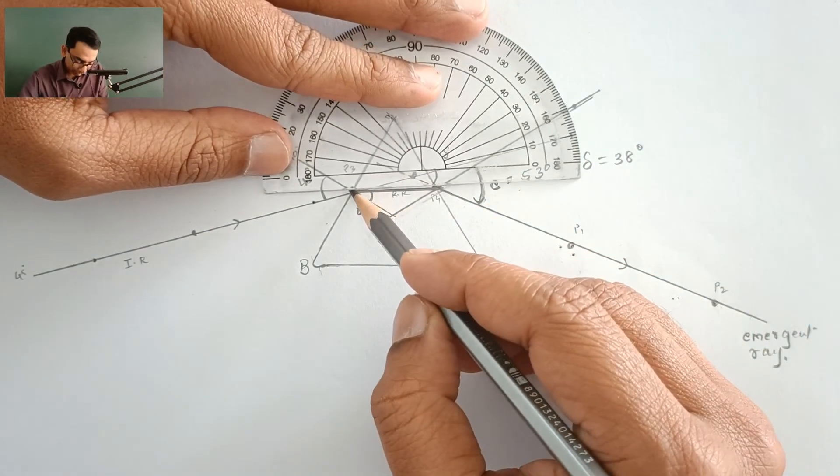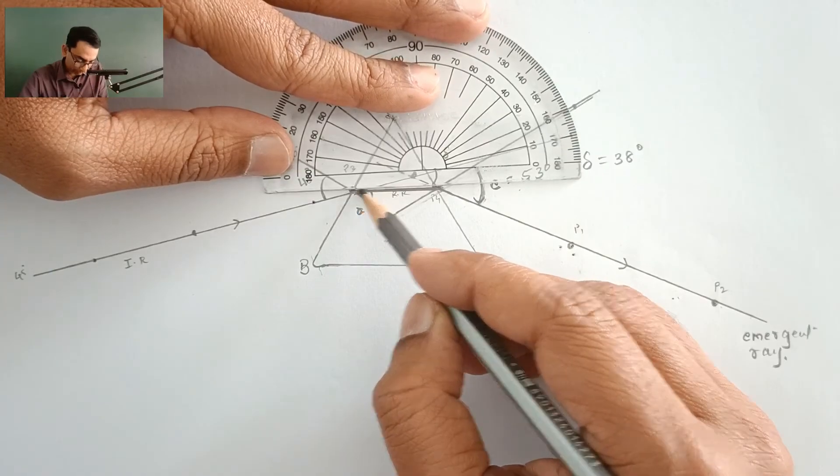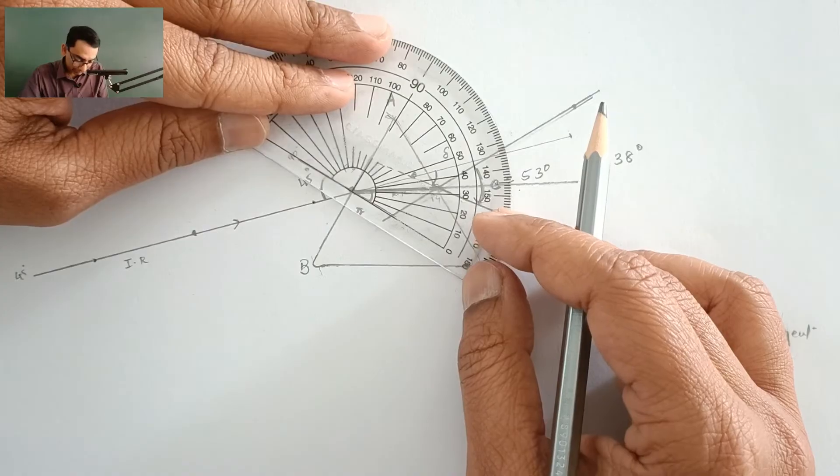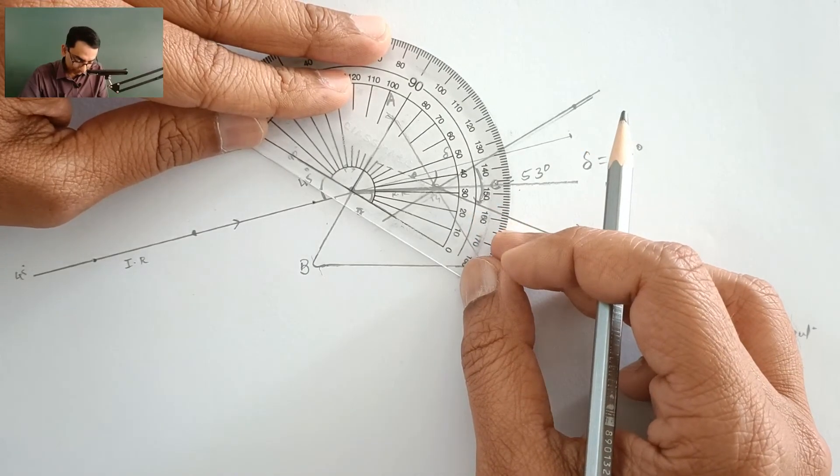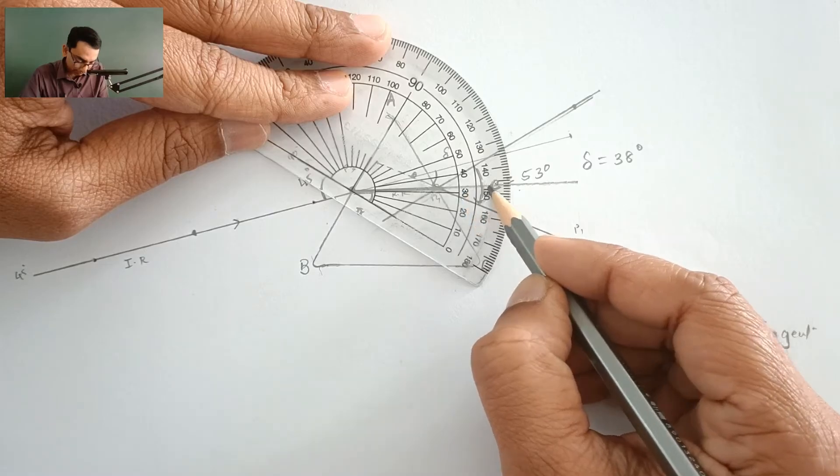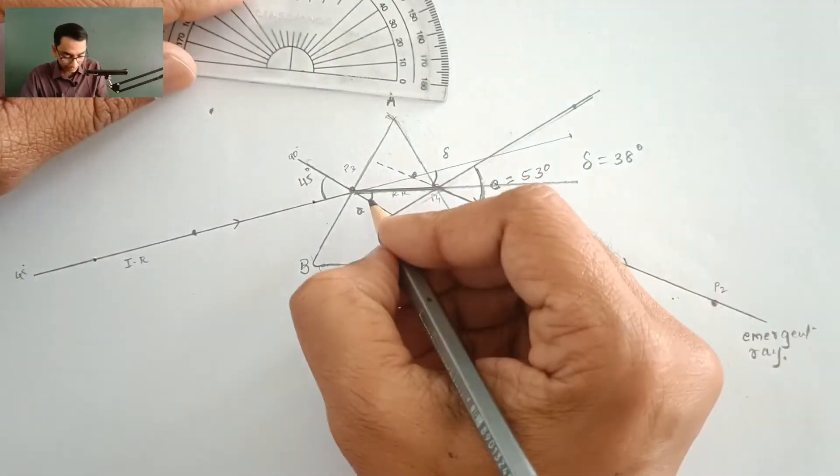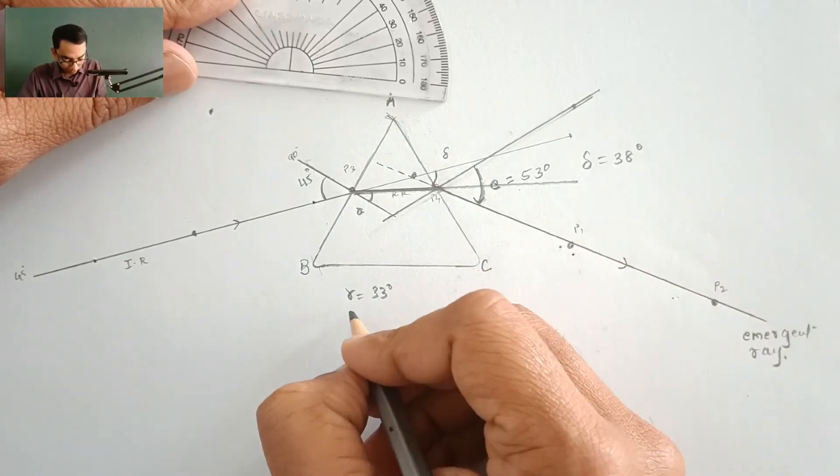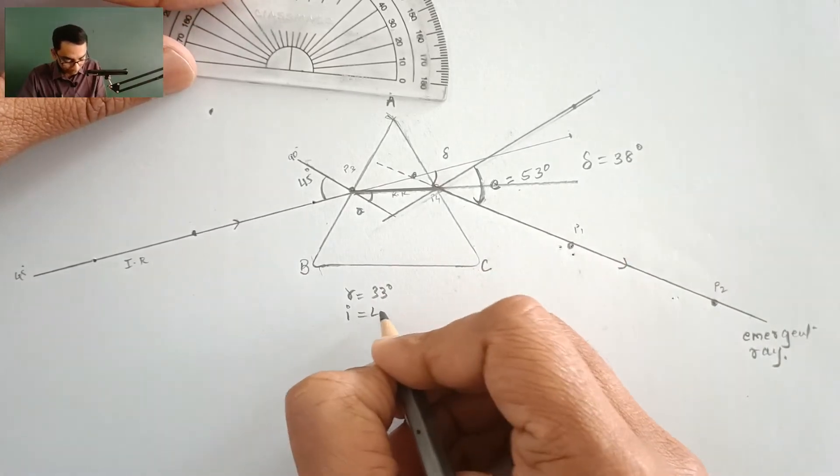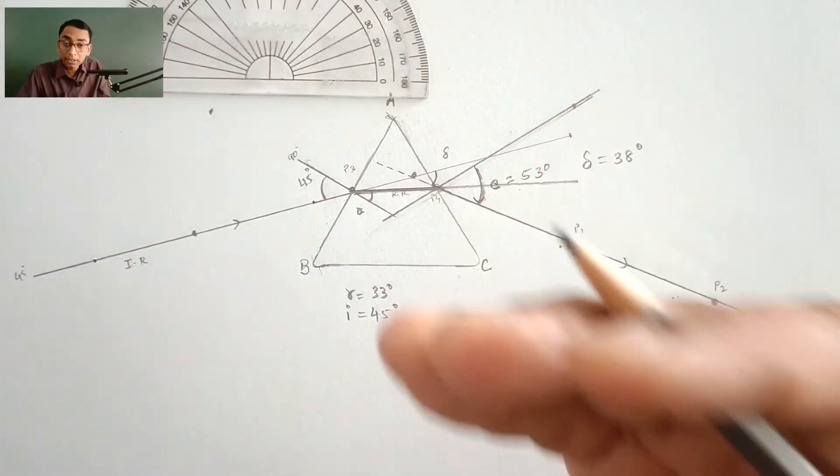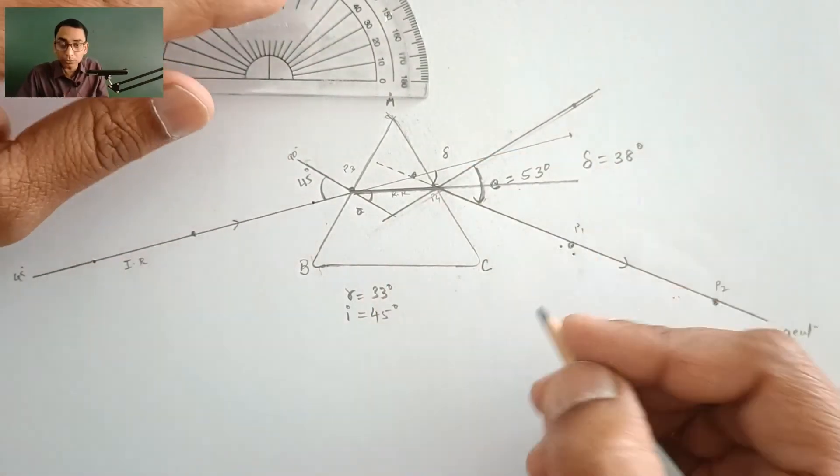For that I will have to extend this refracted ray forward like this one and then 10, 20, 30, roughly around 33 degrees is the angle of refraction. You can also verify with the help of Snell's law. So angle of incidence is 45 degrees. You can also find out the refractive index using these two values.